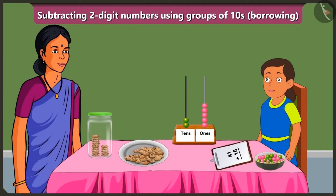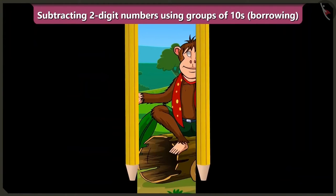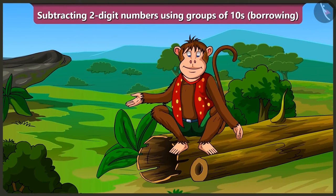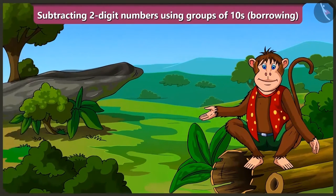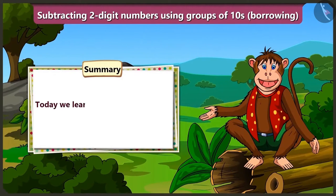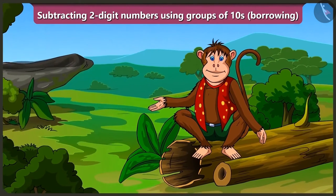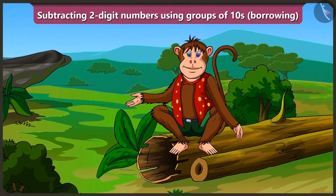Well done, Bubbly. You have subtracted without even writing. Yes, Mummy, you explained it to me very well. Friends, today we learned subtraction of two-digit numbers by borrowing without writing with the help of Bubbly's abacus. In the next video, we will learn to trace some of the things in our surroundings.